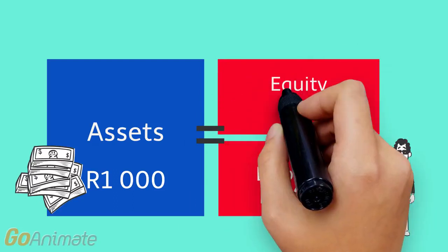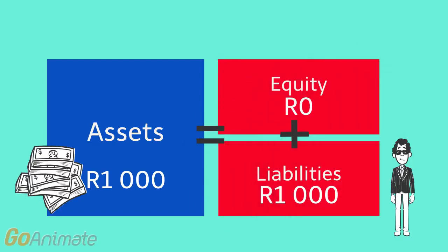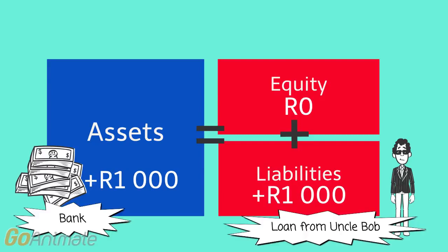So we see that the blue block and the red blocks are equal. We say that the bank balance — the asset — increased by 1,000, and the loan from Uncle Bob — the liability — increased by 1,000.